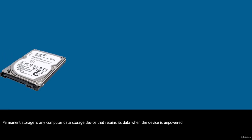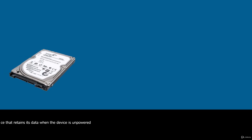Permanent storage is any computer data storage device that retains its data when the device is unpowered. Common examples of permanent storage are the computer's hard drive, SSD, or M.2.